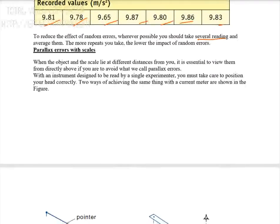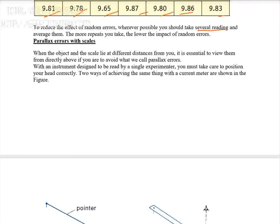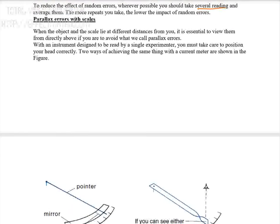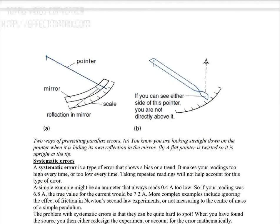Parallax error with scales occurs when the object and the scale lie at different distances from you. It is essential to view them from directly above to avoid parallax error. For example, when reading a watch or a scale from one side, you see a different position than the actual reading. To minimize parallax error, always read the instrument from directly above.